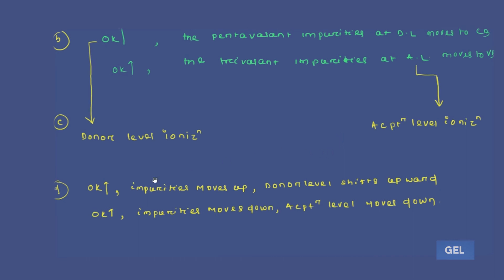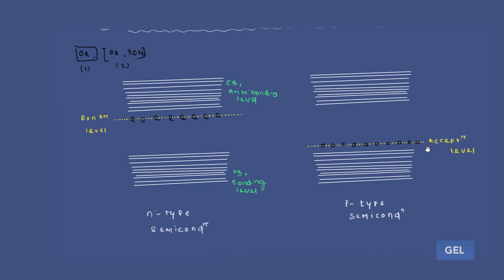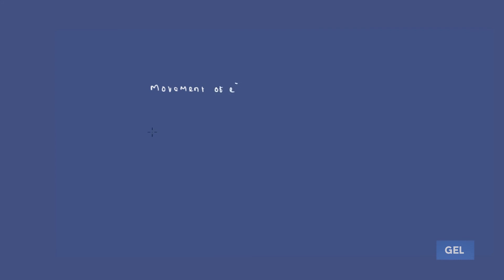If you increase the temperature from 0K, impurities move up, the donor level shifts upward — this is called donor level ionization. Due to donor level ionization, the donor level shifts upward. If you increase the temperature from 0K, holes move down, acceptor level ionization happens, and due to that, the acceptor level moves down.